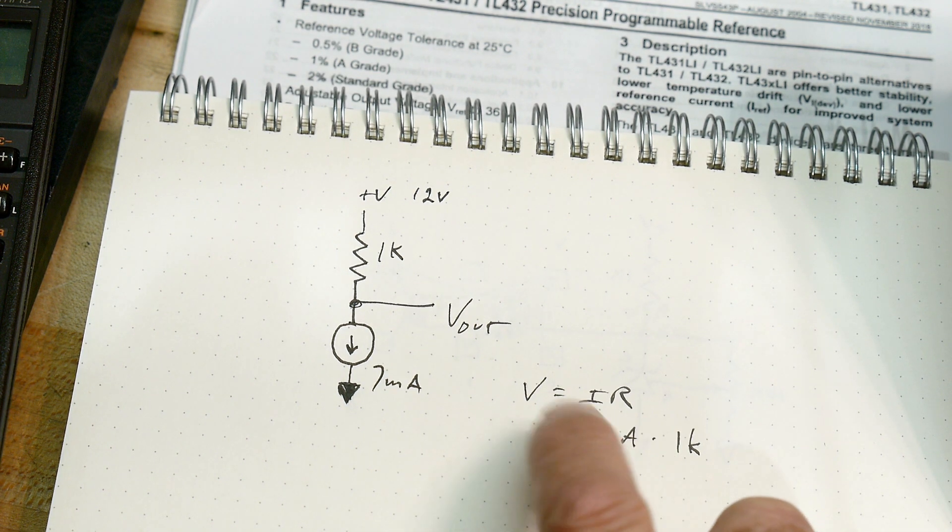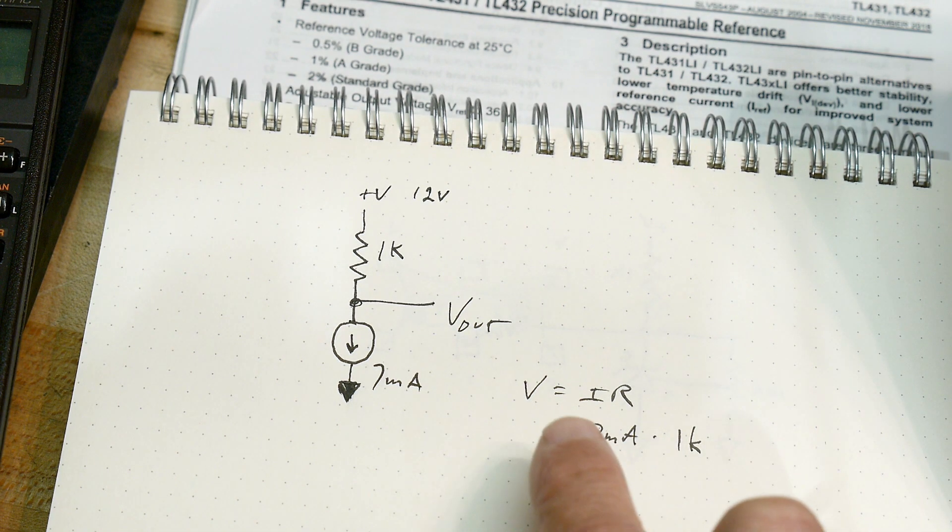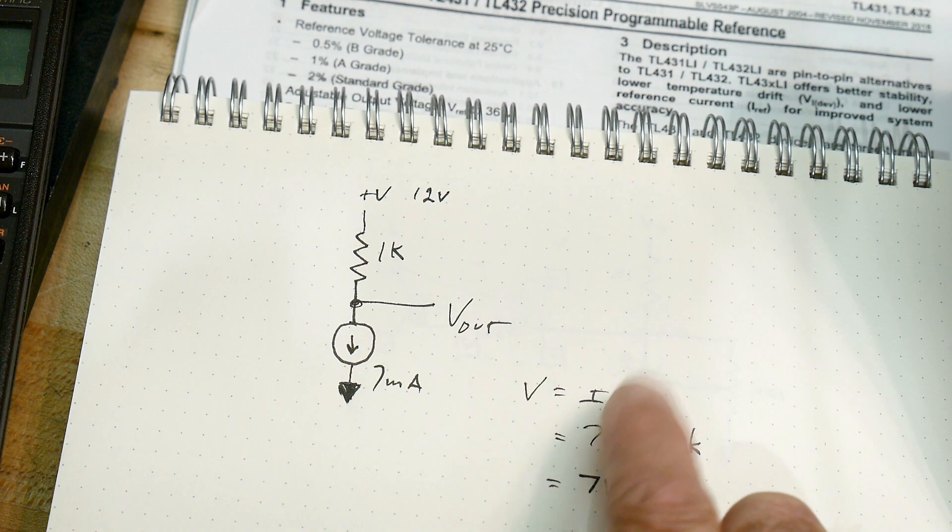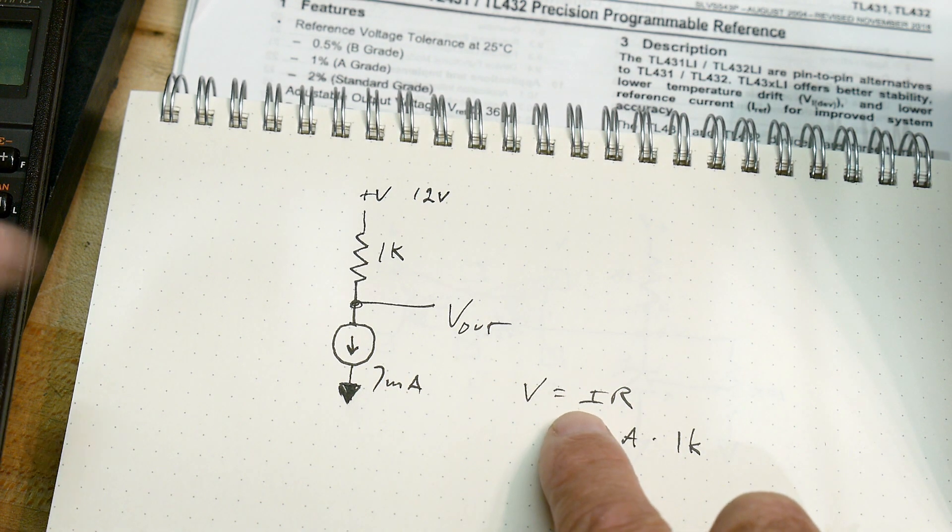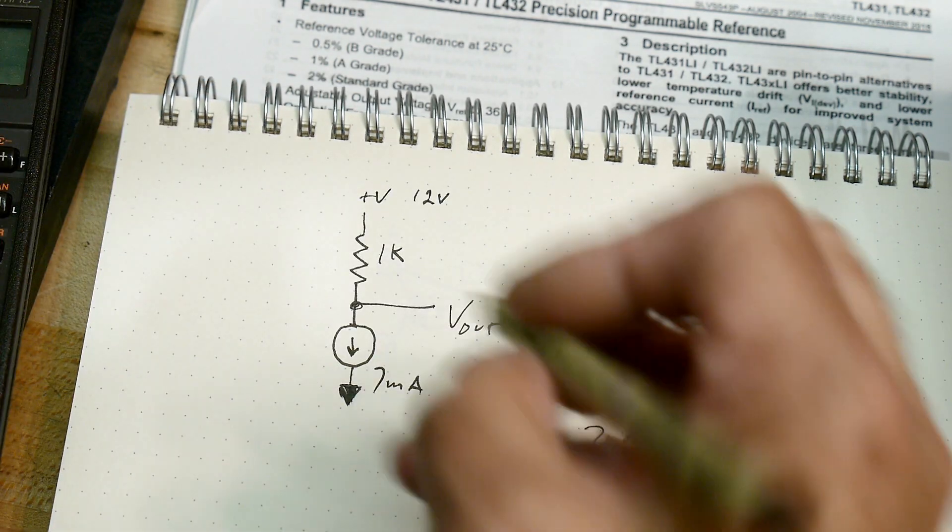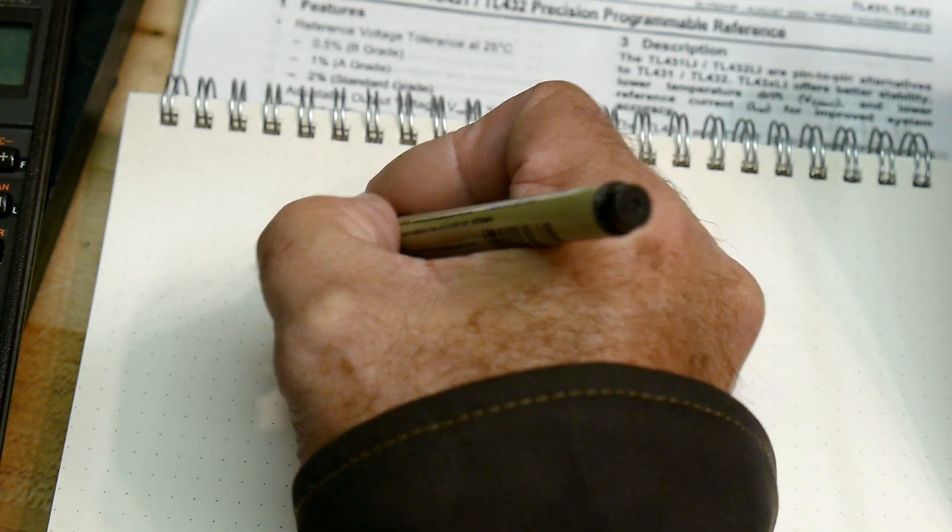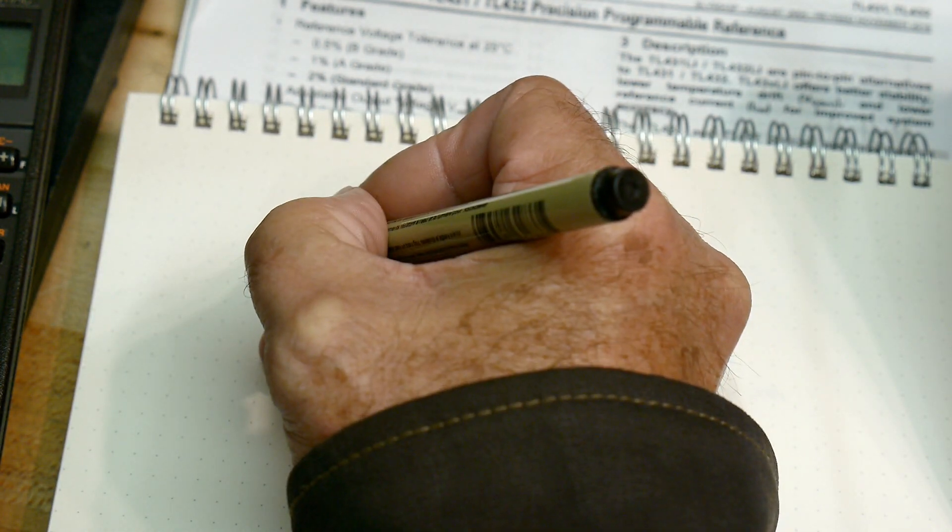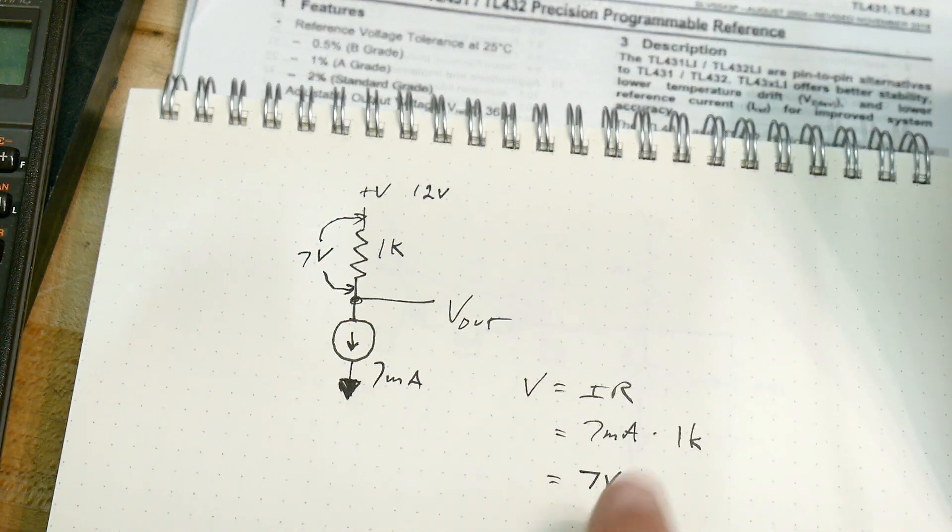So 7 volts where? Well, you have 7 volts across the resistor. V equals IR means that the voltage across this resistor is 7 volts. So if you measure from here to here, you get 7 volts. That's what we've just calculated.